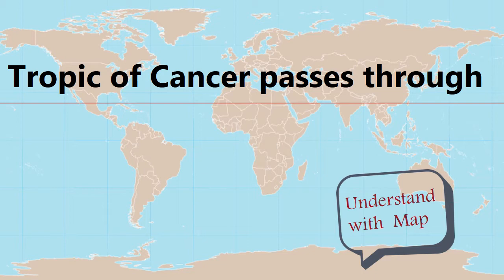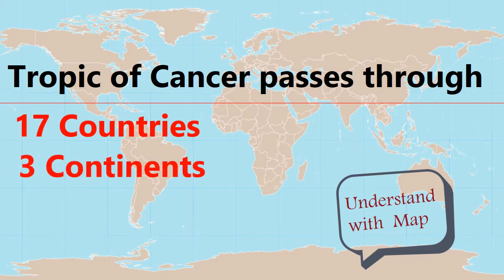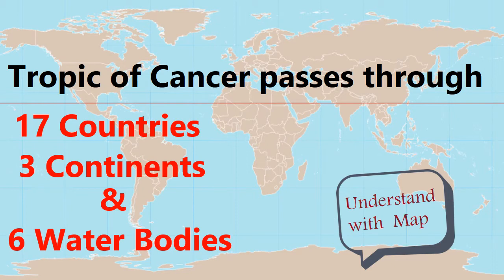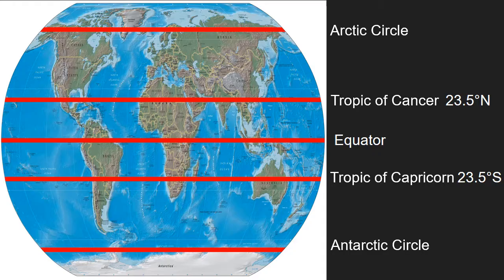The Tropic of Cancer is one of the 5 major circles of latitude and it goes through 17 countries, 3 continents and 6 water bodies. It cannot be seen because it is an imaginary line. The Tropic of Cancer is the area from the equator which circles the earth to the invisible line at 23.5 degrees north of the equator.